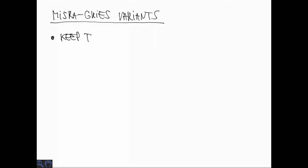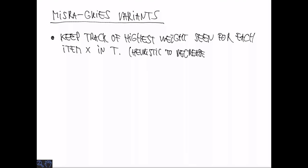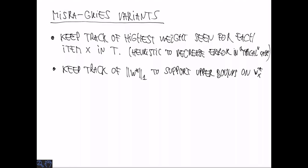So there's a bunch of variants of Misra-Gries. One variant is to keep track of the highest weight you have seen for each item X. So you do subtract from the weight but you also keep track of the highest weight. This is a heuristic to decrease the error in typical cases where entries with high weights stay in the sketch for a long time. You can also keep track of the L1 norm of the true vector count to support upper bounds on the true weights using the formula that the true weight is at most the stored weight plus the L1 norm minus M over k plus 1. So in this way we are going to have both lower and upper bounds explicitly stored.